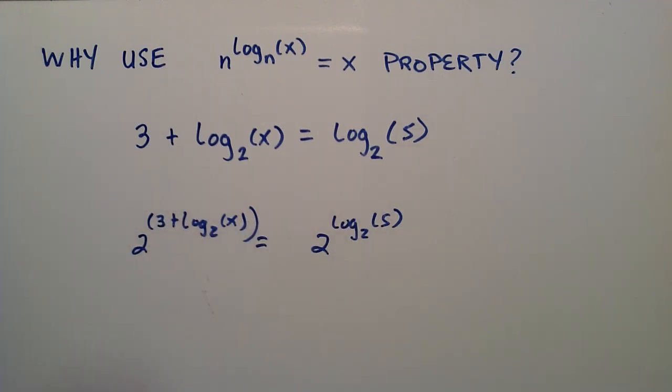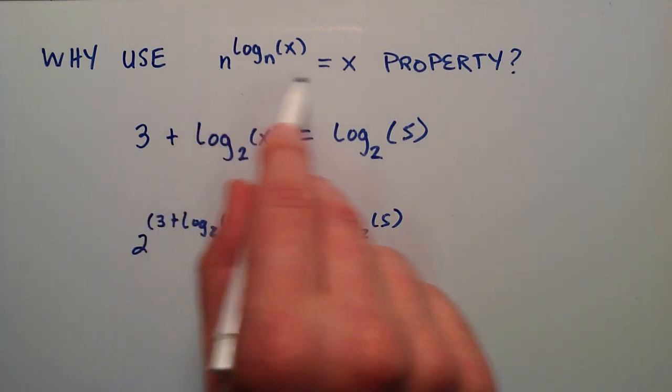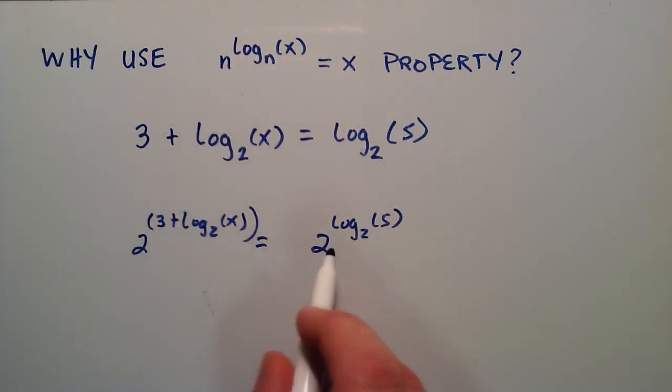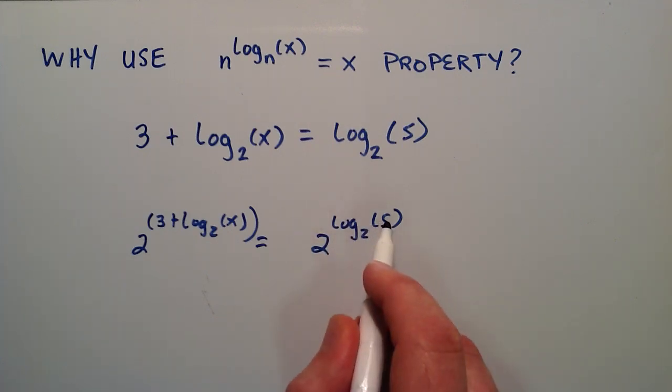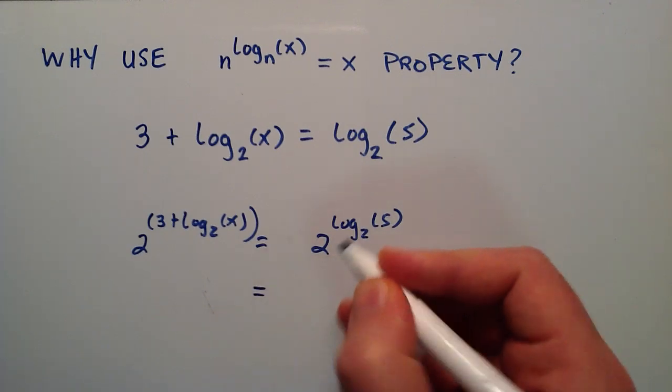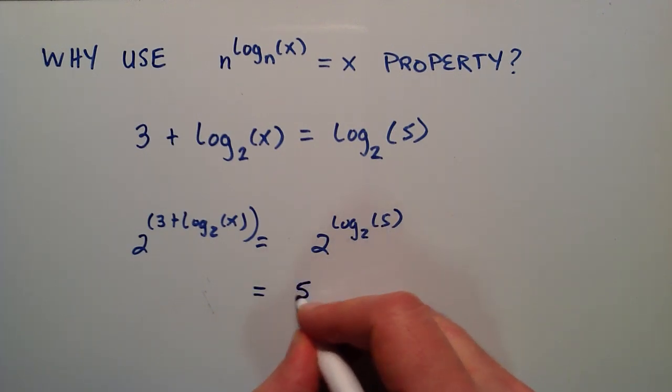So now what we can do is we can use this property right here on the right hand side right away. So we have a base of 2, and then the logarithm base is 2. So this side equals whatever's in the argument. So the argument is 5, so the right hand side equals 5.